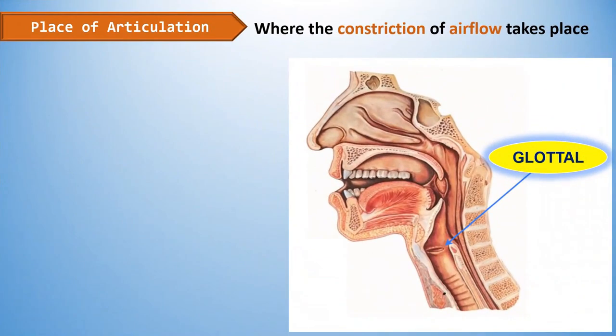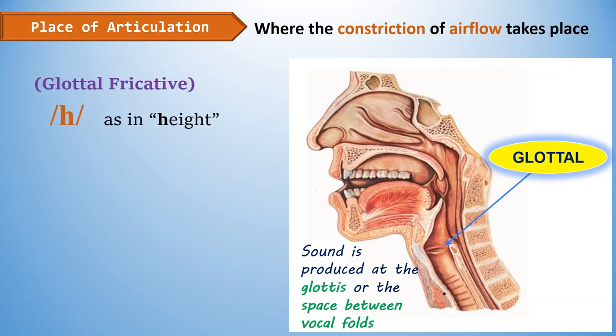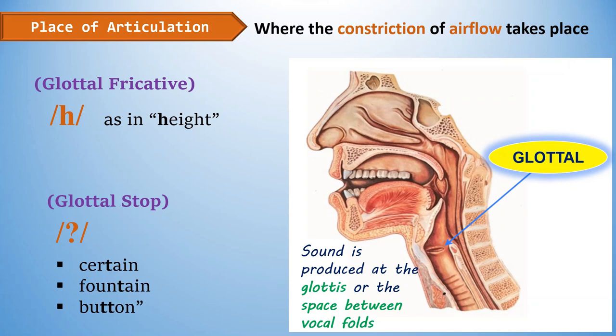The last place of articulation is glottal. Glottal sounds are produced at the glottis, or the space between the vocal folds. An example is the glottal fricative H as in 'height,' and the glottal stop, with a symbol similar to a question mark. It is a variation of the T sound that occurs in a certain position in a word and is pronounced differently — used to make pronunciation sound more like American English. Sample words include 'certain,' 'fountain,' and 'button.'